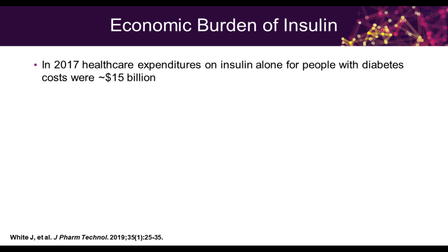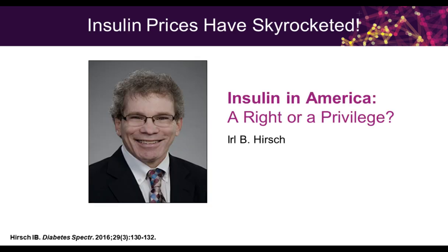We know that there's a huge cost to insulin. If you look at the 2017 healthcare expenditures on insulin alone for people with diabetes, the total costs were approximately $15 billion. And this is just for insulin — we know that there are lots of other costs for patients with diabetes: oral and other injectable medications, complications, hospitalizations, ER visits. The key is to try to provide patients with products they can use, they can afford, and that we can adjust in order to prevent the complications of diabetes and help our patients live long and healthy lives.